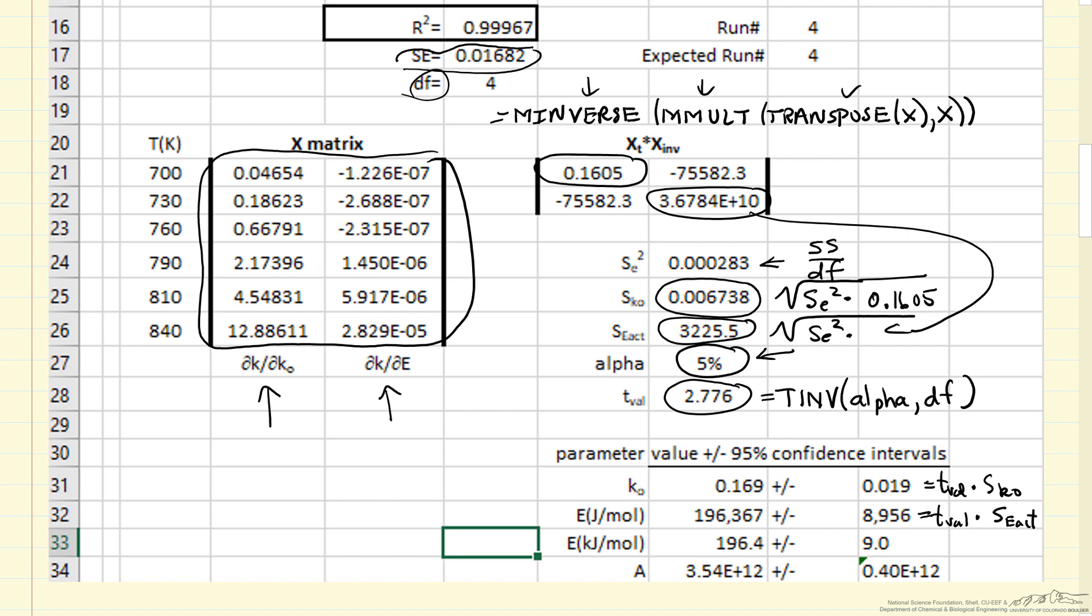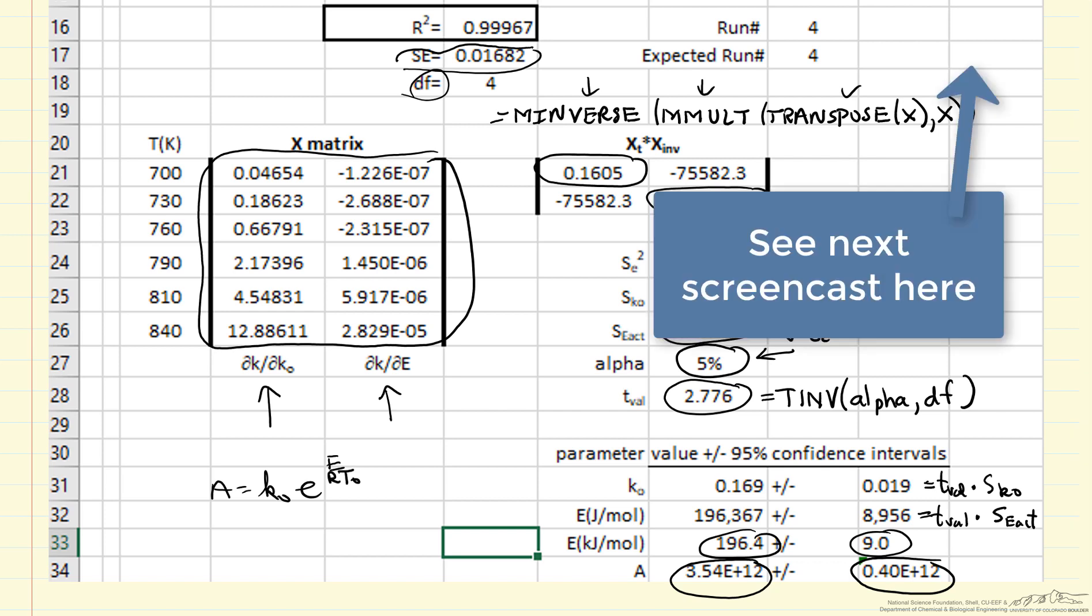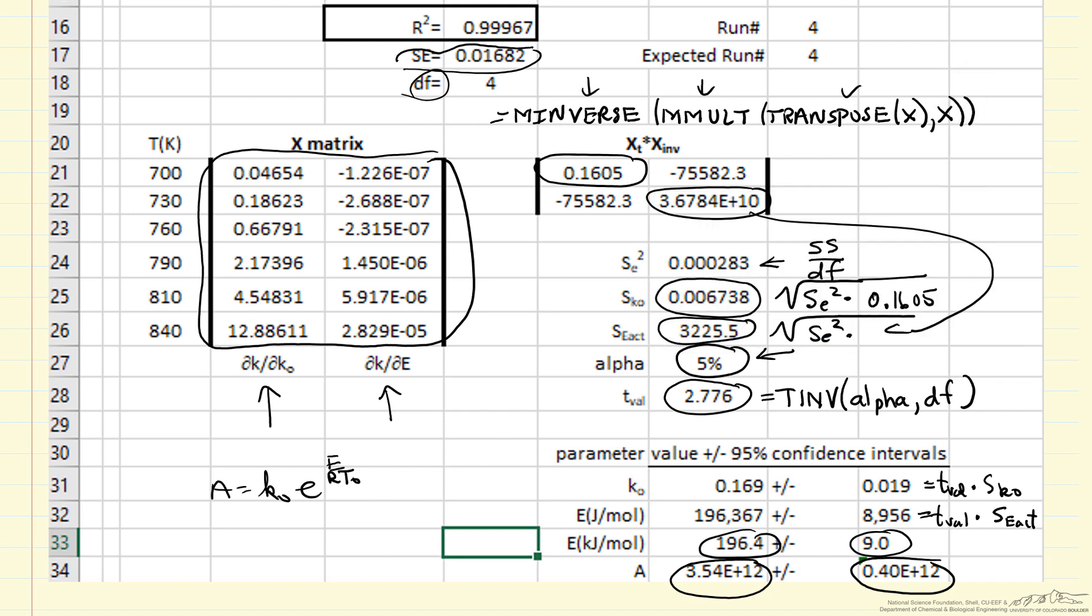I have not explained why we do this. All we're interested here is the mechanics of how we carry out these calculations in order to keep this at a reasonable length. I've also written the activation energy in kilojoules instead of joules. And then I've calculated the pre-exponential factor, and then the 95% confidence limits, the pre-exponential factor. The pre-exponential factor was just K0 times E over RT0. In another screencast, we'll actually look at the Excel program and carrying out these calculations.